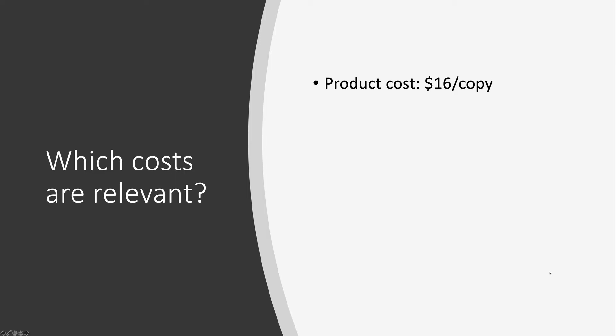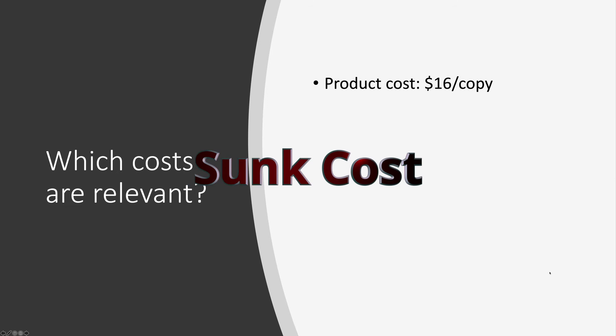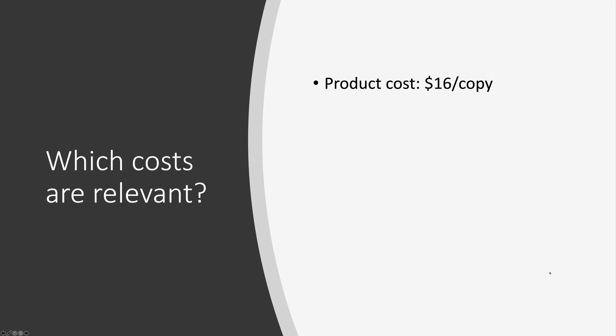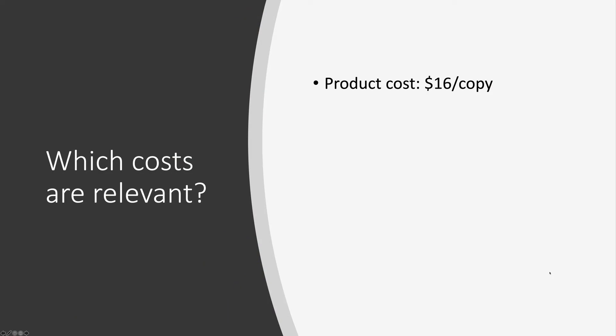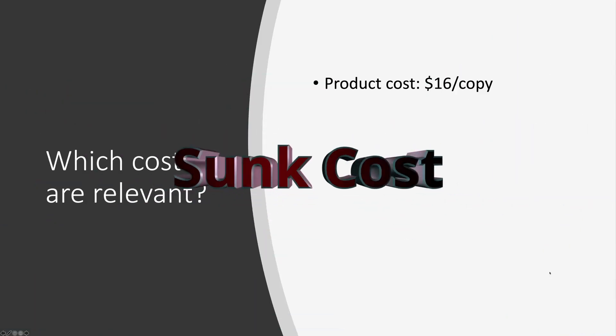The production cost is what we call a sunk cost. A sunk cost is the type of cost that, no matter what you do in the future, you cannot recoup. So after the books are printed, there's no way of recouping this cost. This $16 per copy is irrelevant to our pricing decisions — it's a sunk cost.